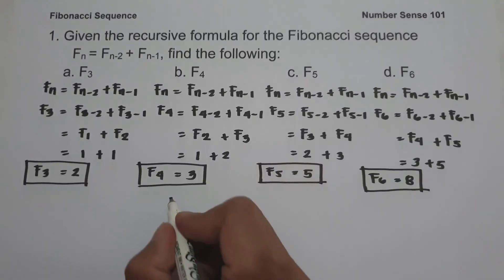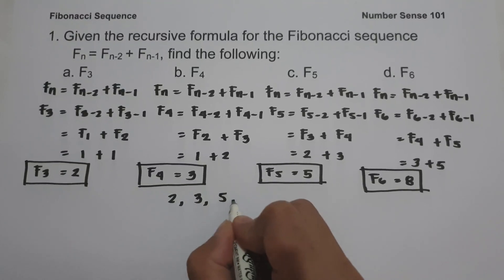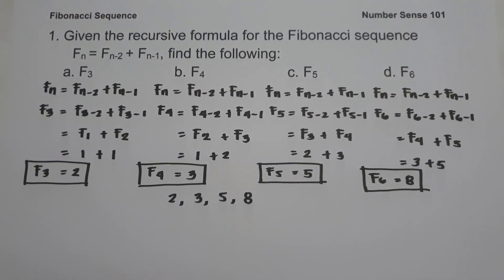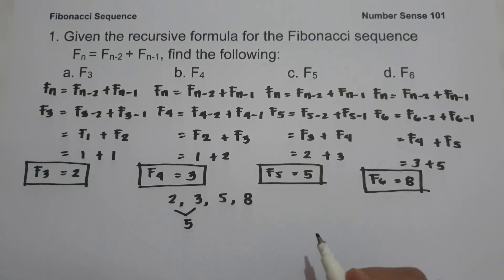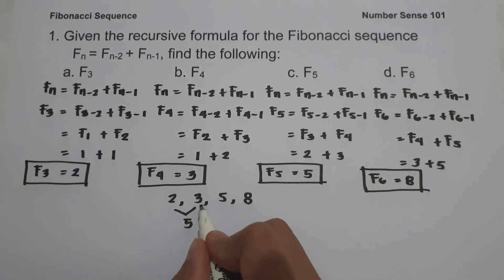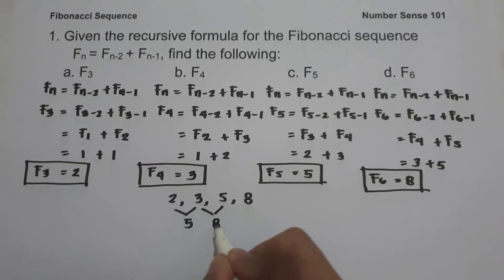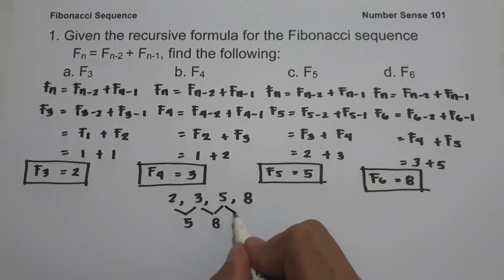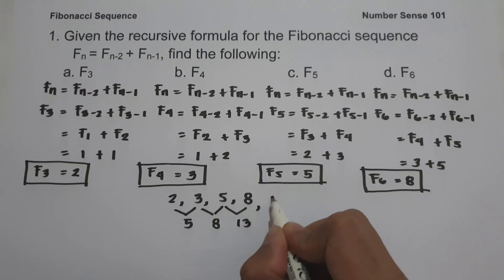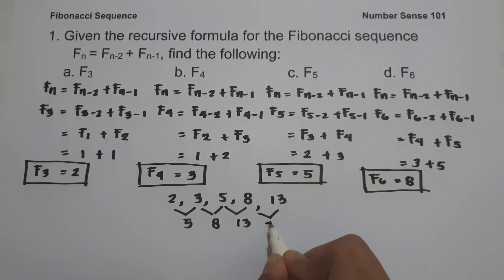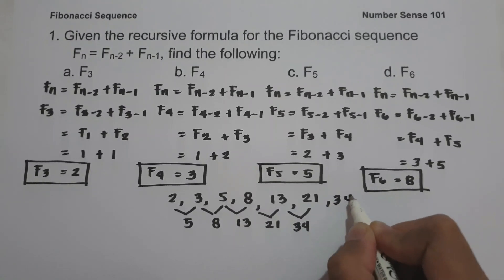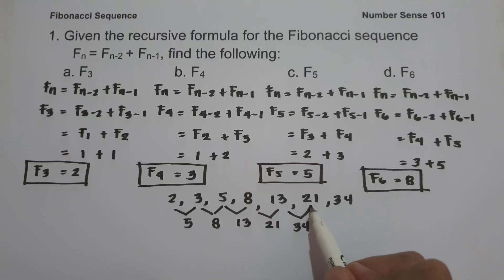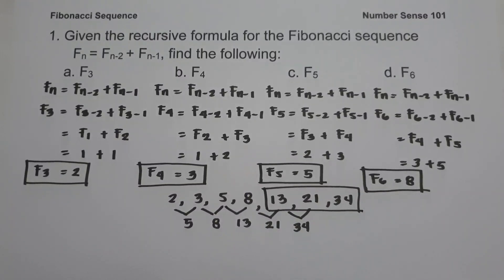If you write out the sequence, this will be 2, 3, 5, and 8. To find the next three terms, observe the pattern: the third term 5 is obtained by adding the first and second terms (2 + 3 = 5), and the fourth term 8 is obtained by adding the second and third terms (3 + 5 = 8). Continuing: 5 + 8 = 13, 8 + 13 = 21, and 13 + 21 = 34. So the next three terms are 13, 21, and 34.